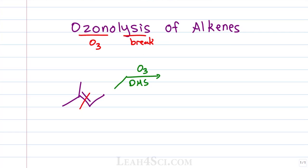For every reaction we break the pi bond, but under reductive conditions, any secondary carbons — meaning they start out tertiary and then break up to be secondary — will wind up as a ketone, and any secondary carbons that when broken become primary will form an aldehyde.